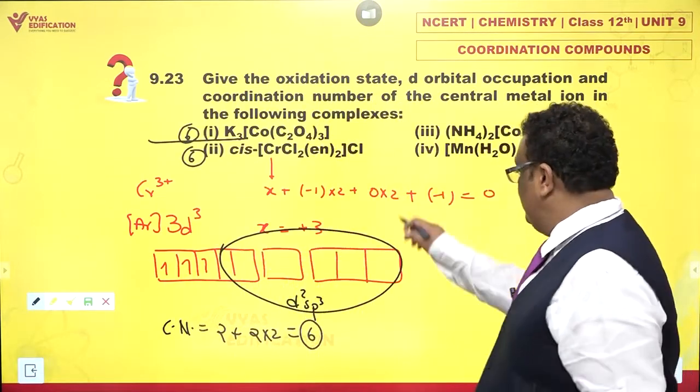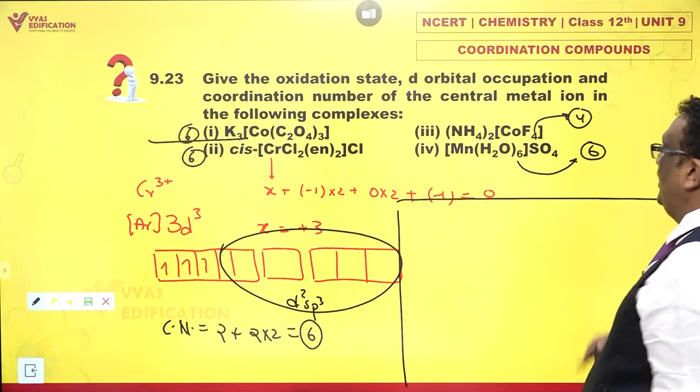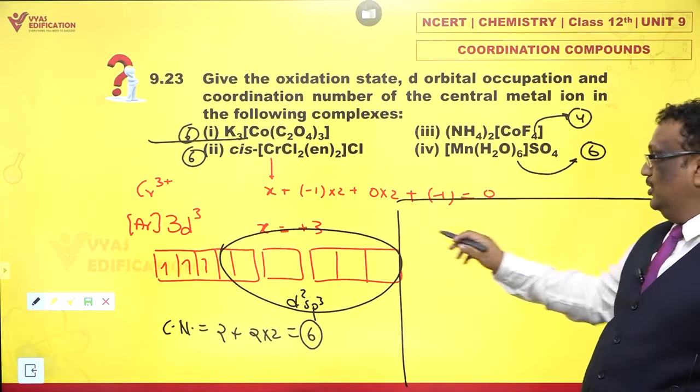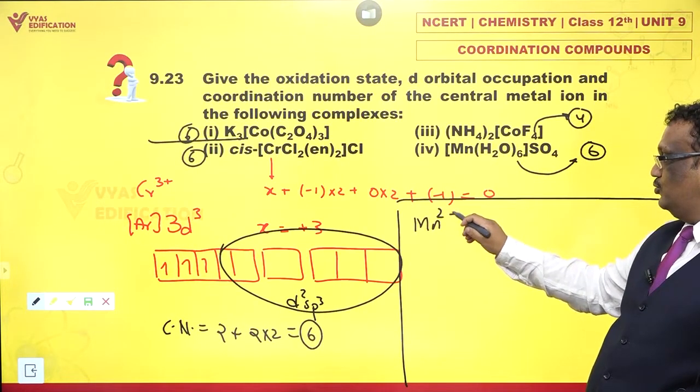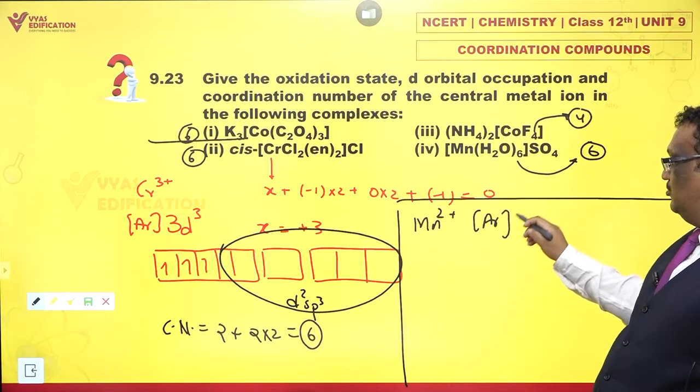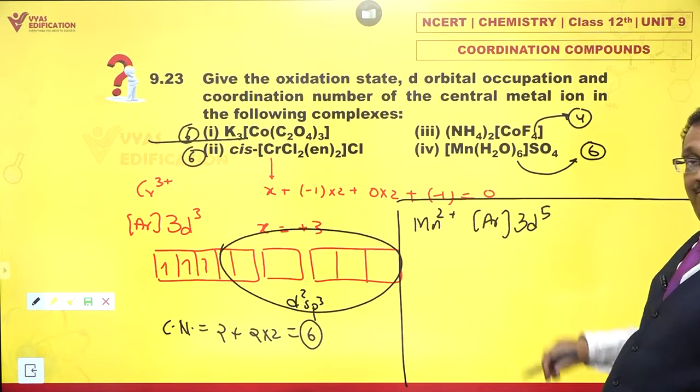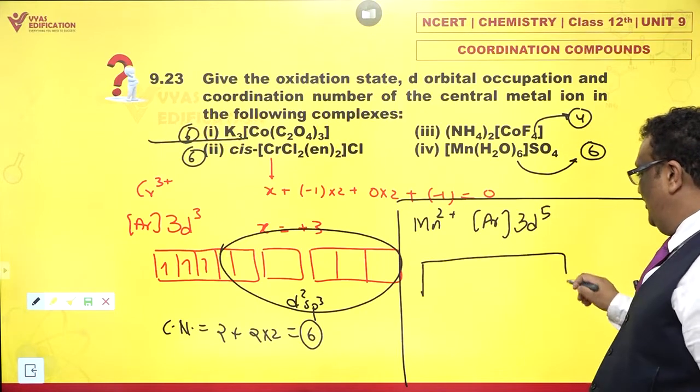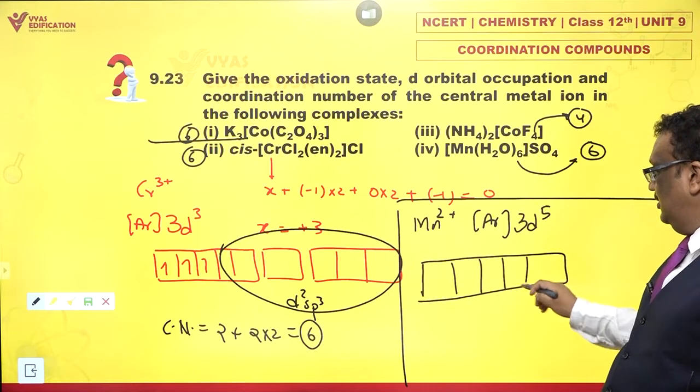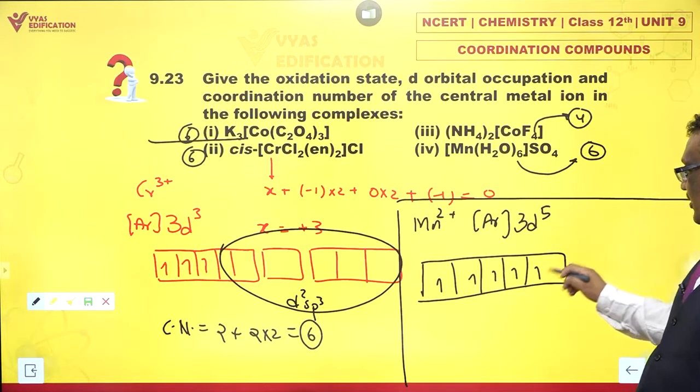What about the last and the least? Let's take a look. [Mn(H2O)6]SO4. This is manganese +2. Argon 3D5. Fascinating. Let's draw a box diagram. 1, 2, 3, 4, 5.